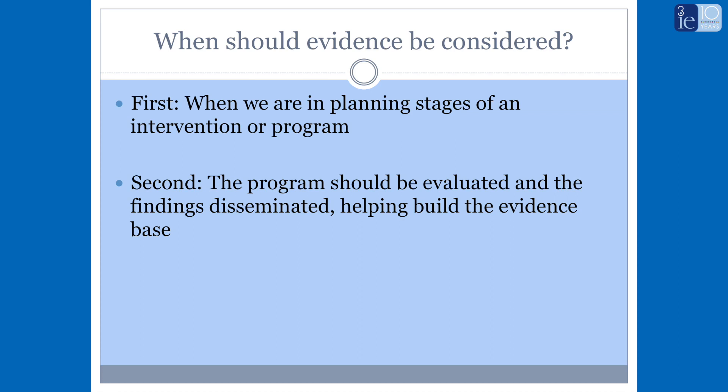We call it publication bias — the assumption that because something is published it must be a good study, which is not the case. In social sciences in India, less than 27% of actual work gets published, meaning 73% is sitting with no publication — not entering any journal or peer review process. If you restrict yourself to searching for evidence only in peer-reviewed domains, you're losing out on 73% of work not sitting on any peer review database like PubMed.